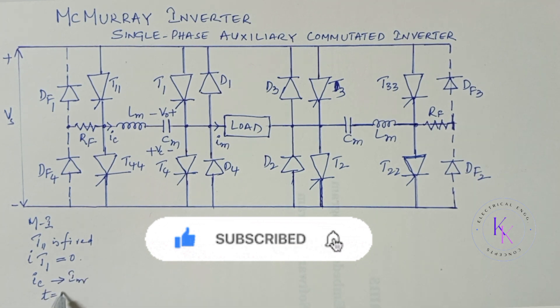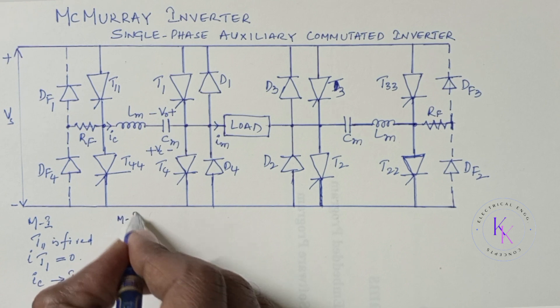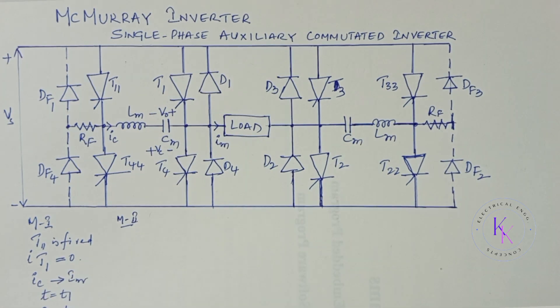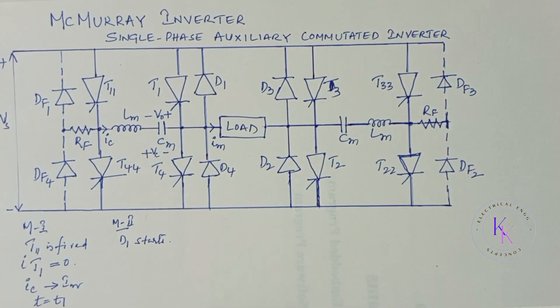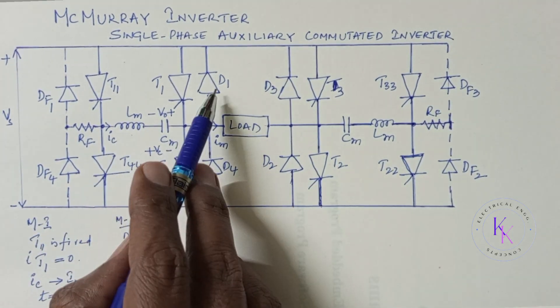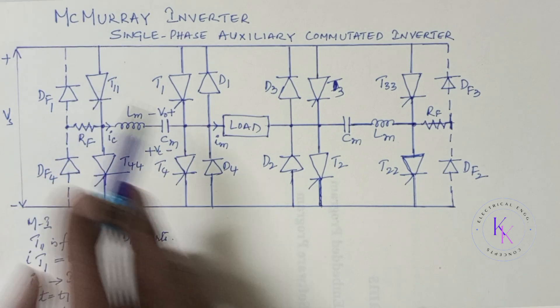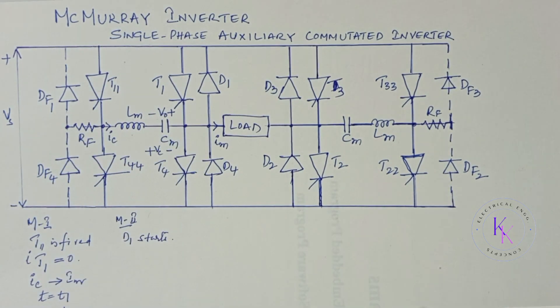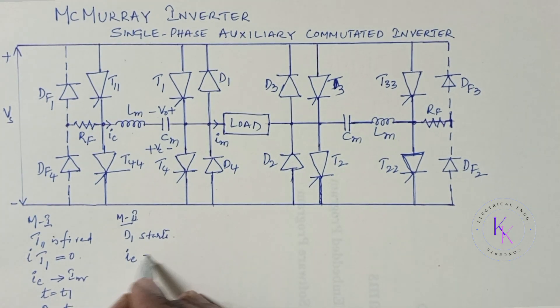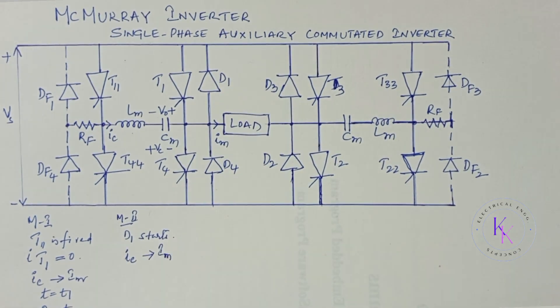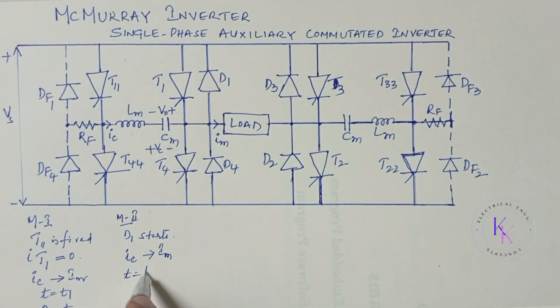Mode 2 operation: This mode begins when D1 starts conducting and the resonant oscillation continues through LM, CM, D1 and T11 as T1 is turned off in the previous mode. This mode ends when capacitor current IC falls back to IM, that is load current, at T equals to T2. This mode operates between T1 and T2. At the end of mode 2, D1 stops.